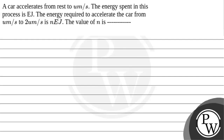Hello. Let's read the given question. The question states that a car accelerates from rest to U meter per second. The energy spent in this process is E joule. The energy required to accelerate the car from U meter per second to 2U meter per second is N times E joule. The value of N is?